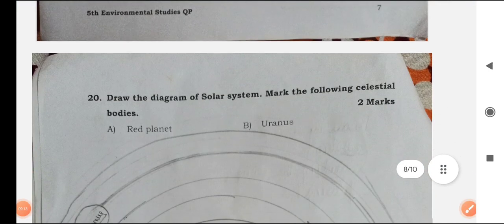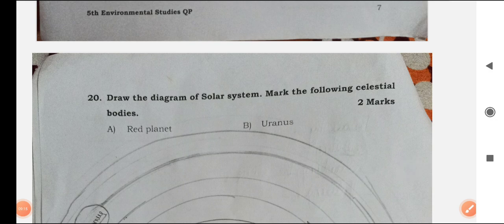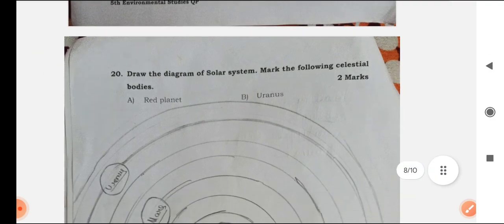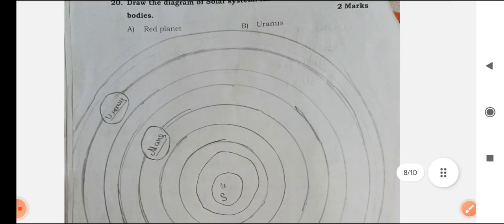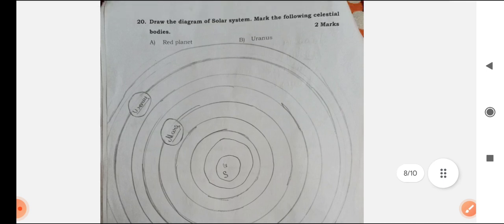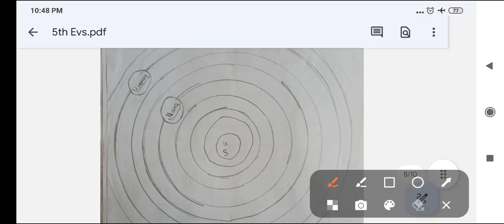Next, draw the diagram of solar system, mark the following red planet and Uranus. This is rough diagram of solar system. Mars is here and Uranus is here.